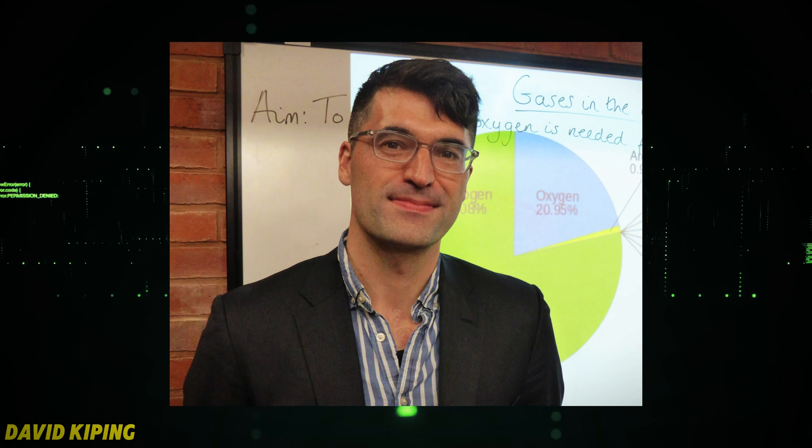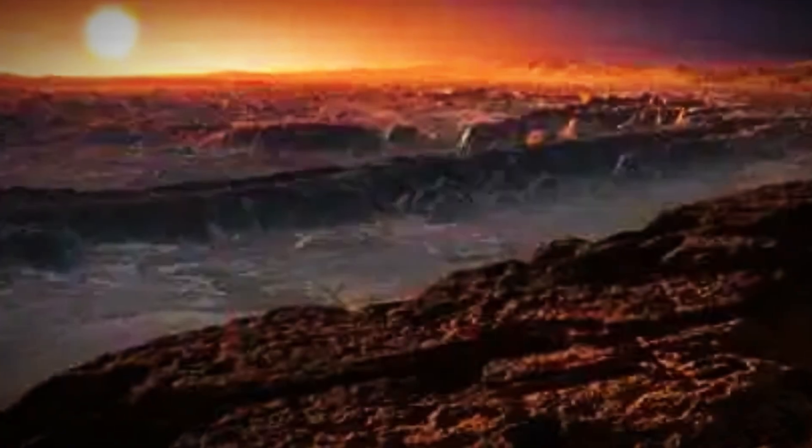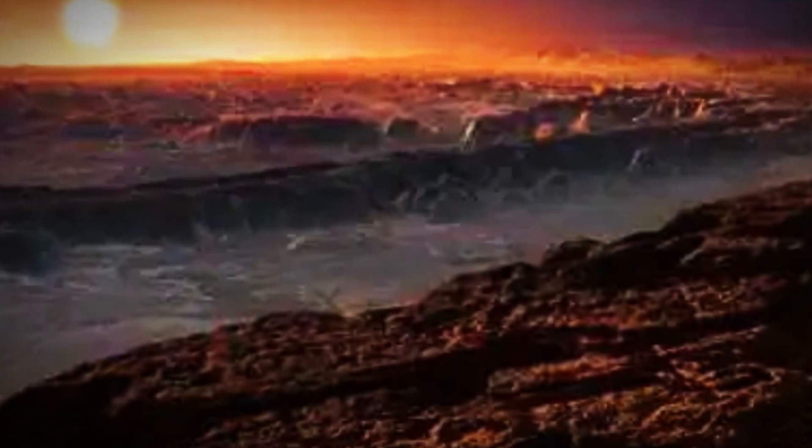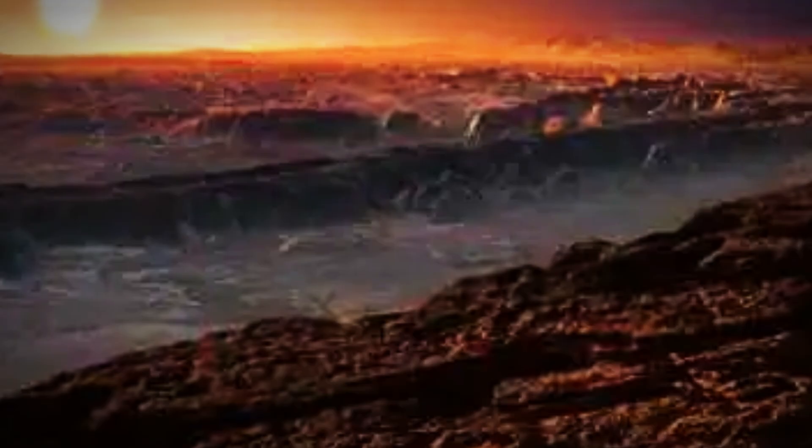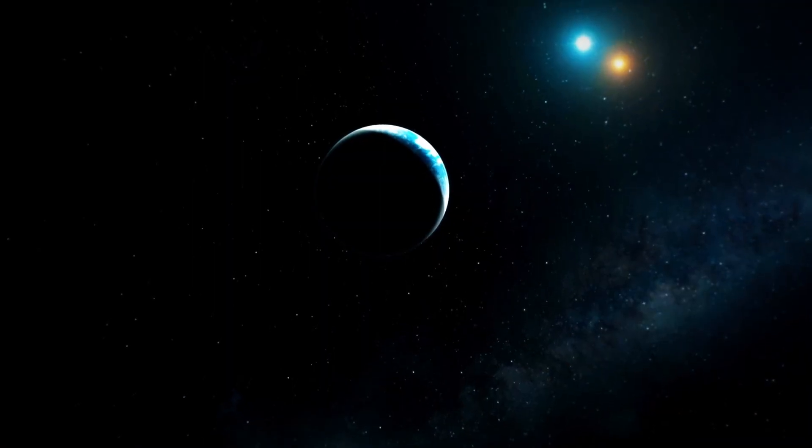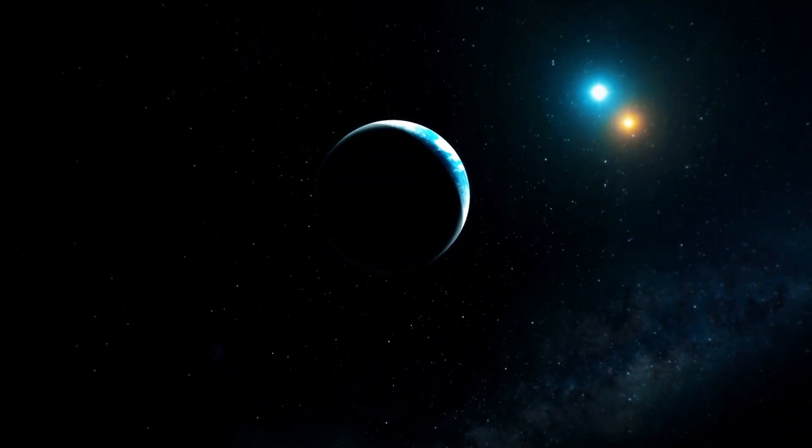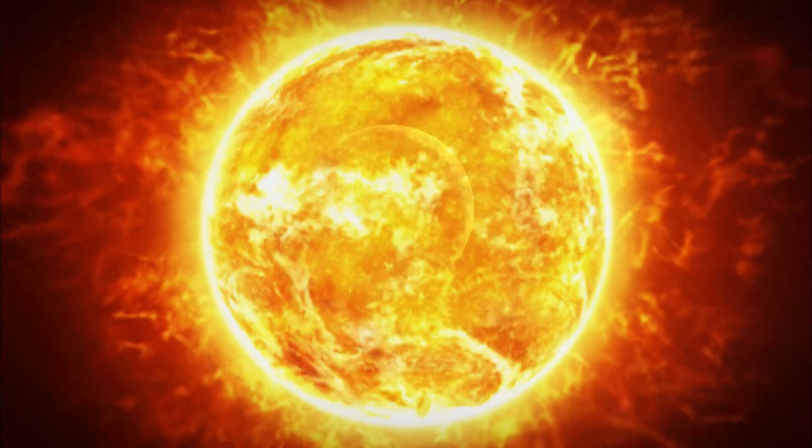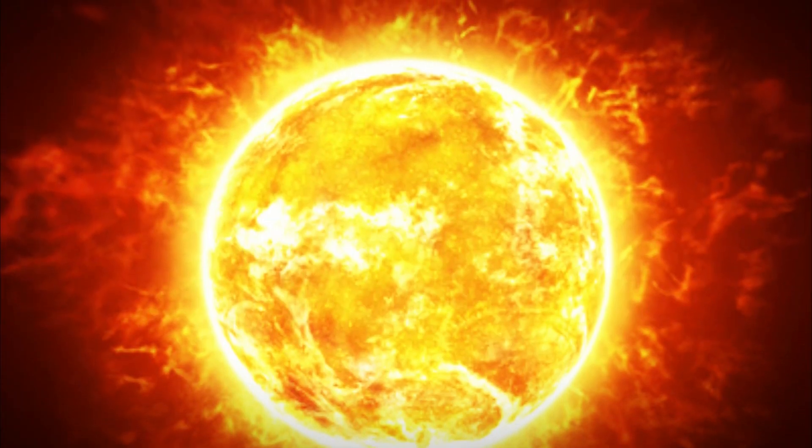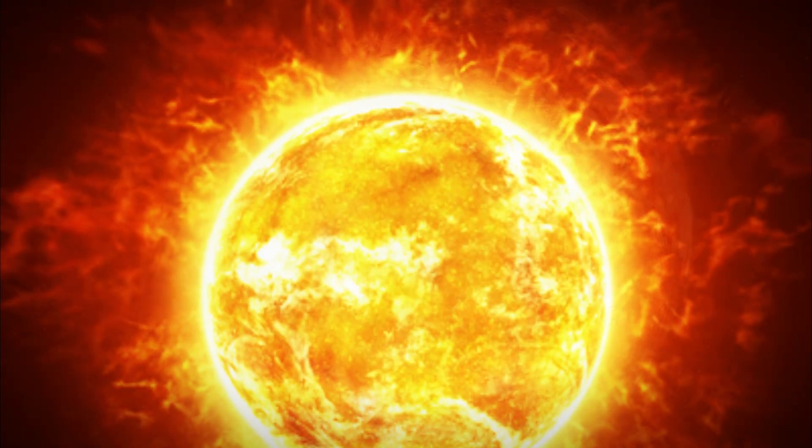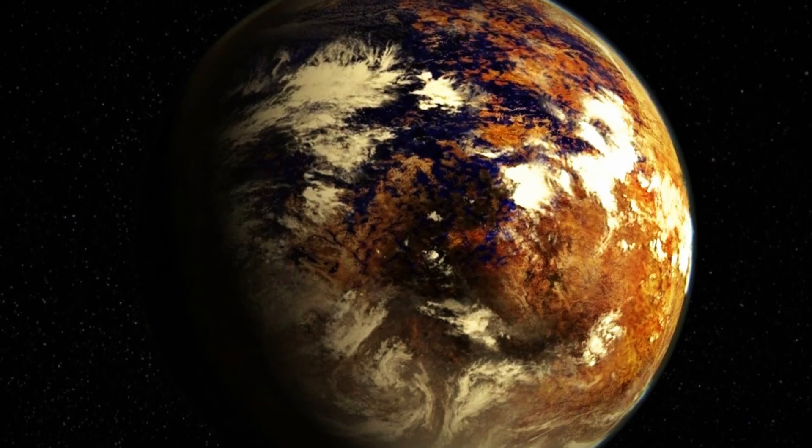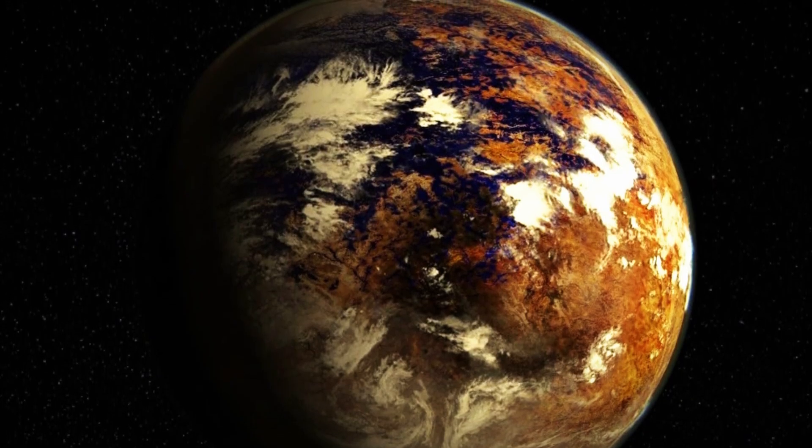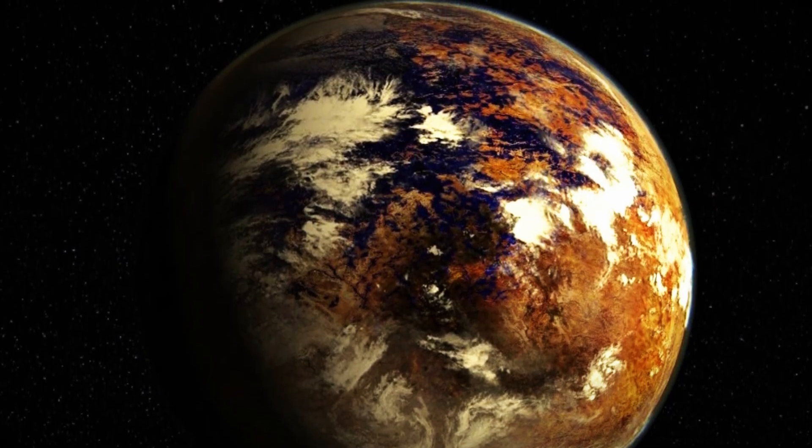David Kipping, a scientist at Columbia University, described Proxima b as an enigma, made even more mysterious by these city-like illuminations. He pointed out that the heating patterns on Proxima b differ from those of other known planets. While most rocky planets absorb sunlight and release infrared energy, Proxima b shows a distinct infrared signature, unlike anything from its parent star, Proxima Centauri.